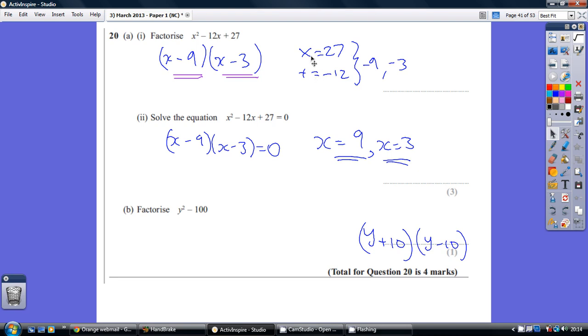So over on the side, just write this down. So two numbers that multiply equal this, but add to equal this. Then work through the various combinations, the various whole numbers that times together to make 27, and then just see if any of them actually work for adding up to minus 12 as well, and you'll get these two numbers.